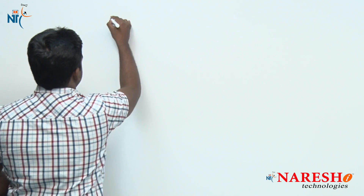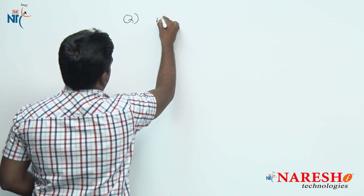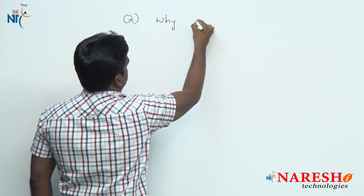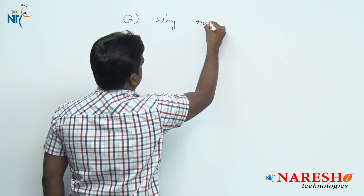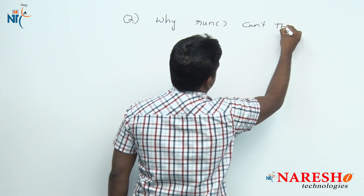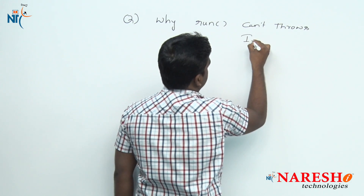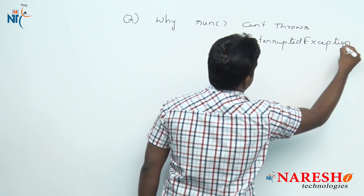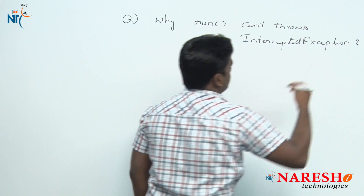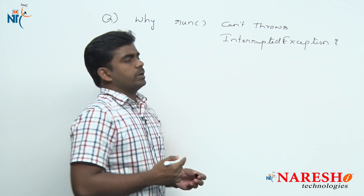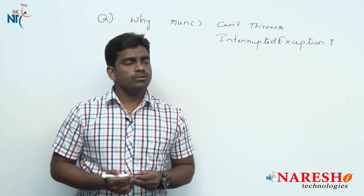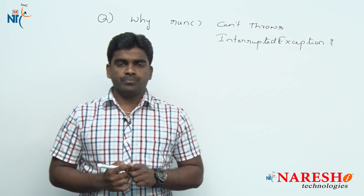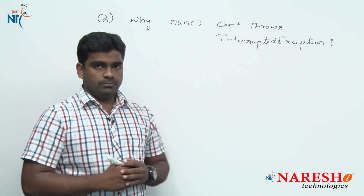The question is: why the run method cannot throw InterruptedException? While writing thread programming, you will face this problem definitely — this question will arise.